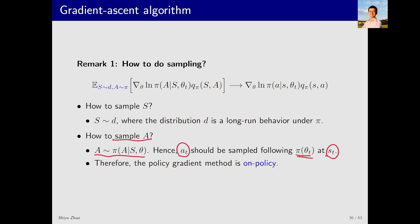This is why the policy gradient algorithm is on-policy. Since the policy is continuously improving it is the target policy, and since actions must be generated by the policy it is also the behavior policy. Hence policy gradient algorithms are on-policy. We can convert them to off-policy, but it requires additional techniques discussed in the next lecture.